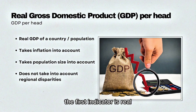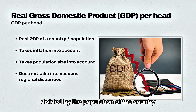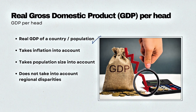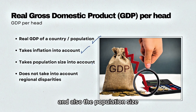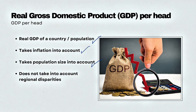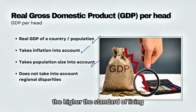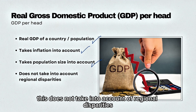The first indicator is real gross domestic product per head, or per capita. This is the real GDP of a country divided by the population of the country. The benefits of using this tool is that it takes inflation into account and also the population size. So the higher the GDP per head, the higher the standard of living of every individual in that country.